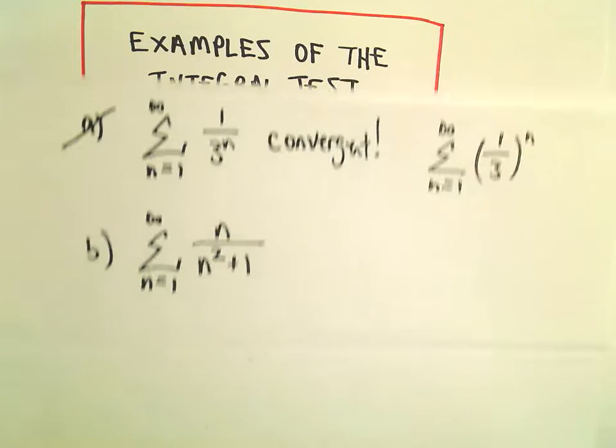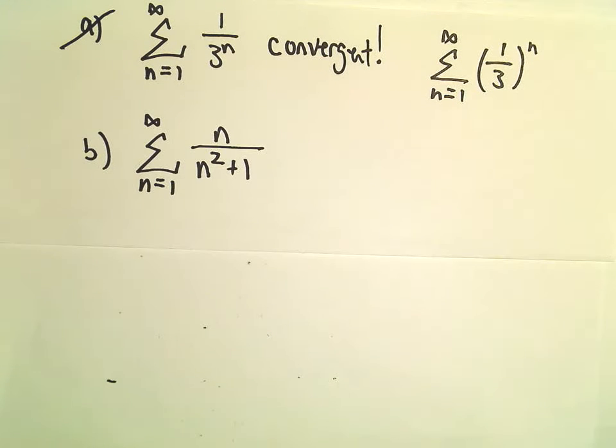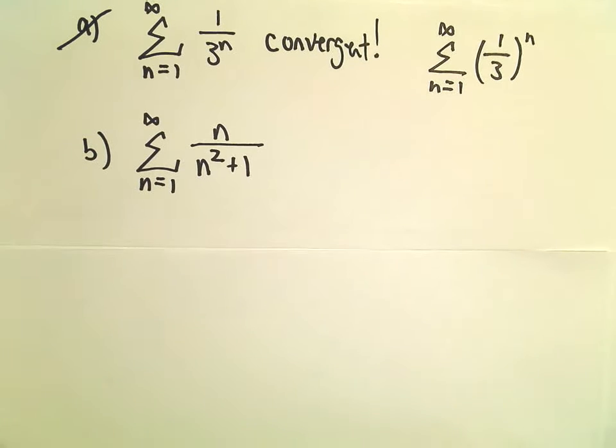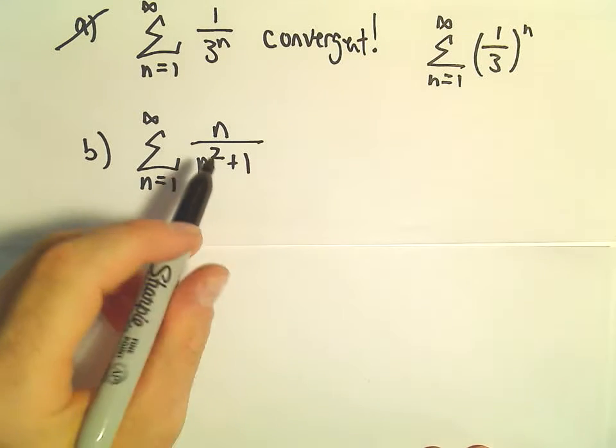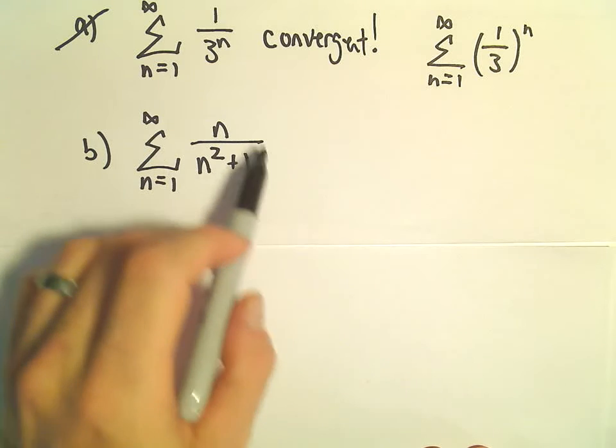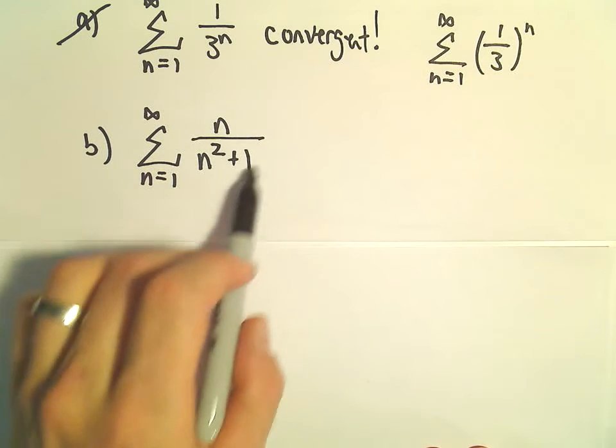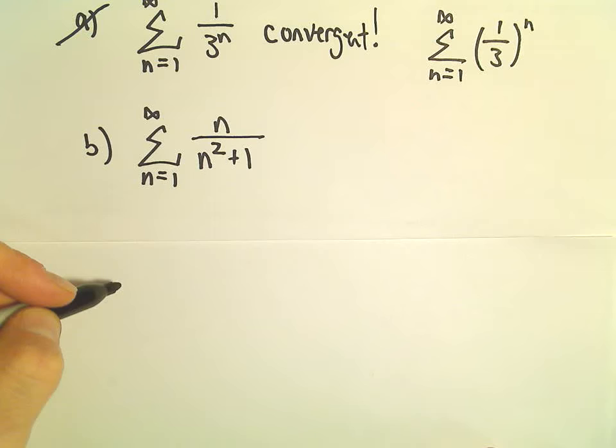Alright, so one more example here of the integral test. We've got the series from 1 to infinity of n over n squared plus 1. So a couple things here. By the test for divergence, this limit would equal 0. So it may converge, it may diverge.